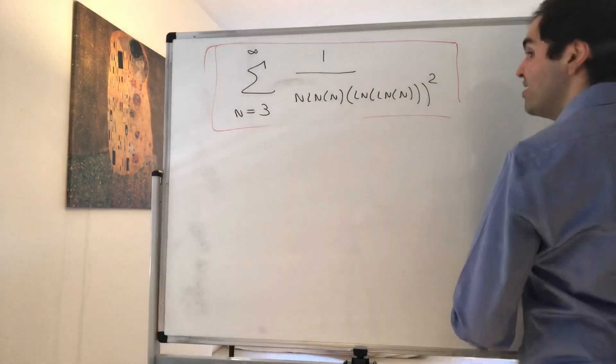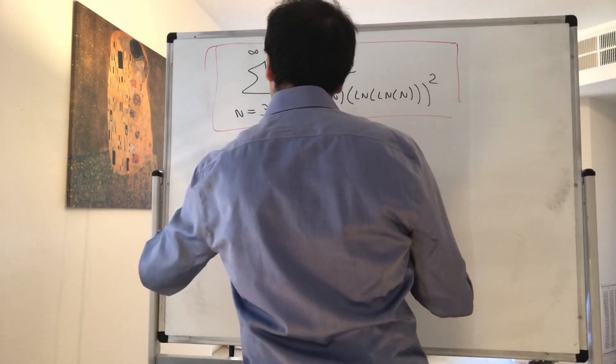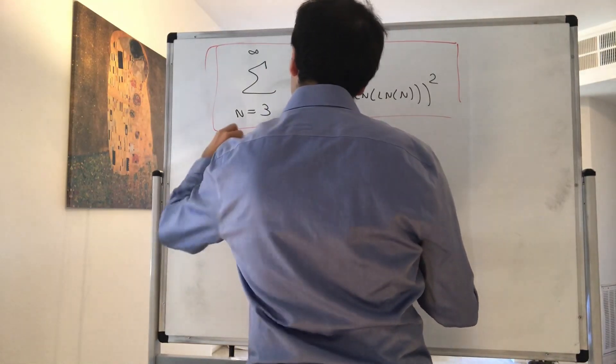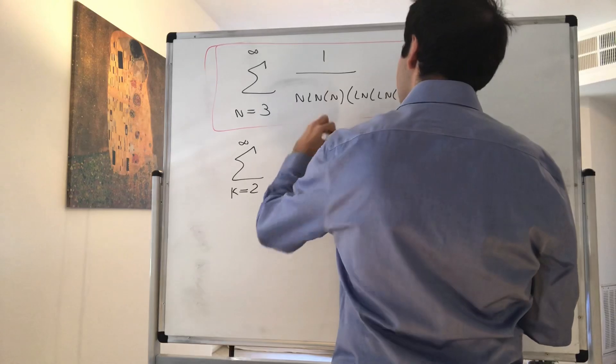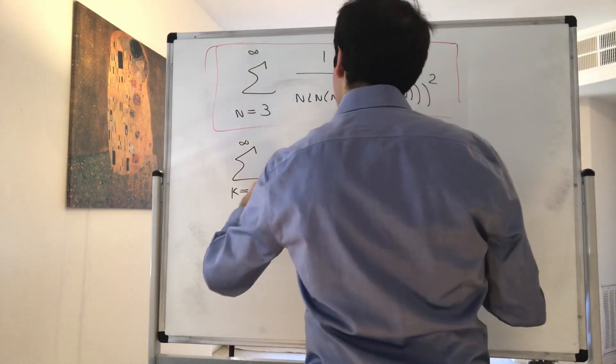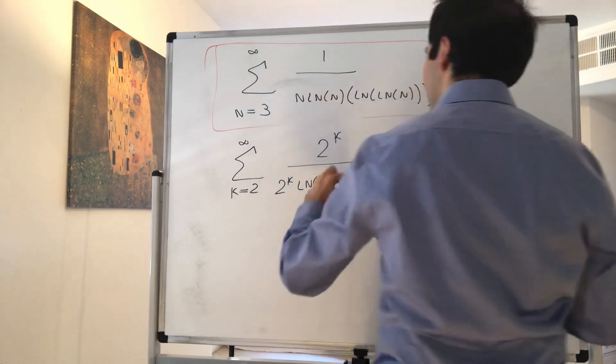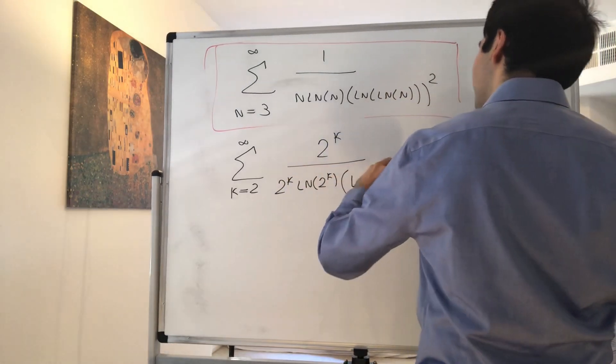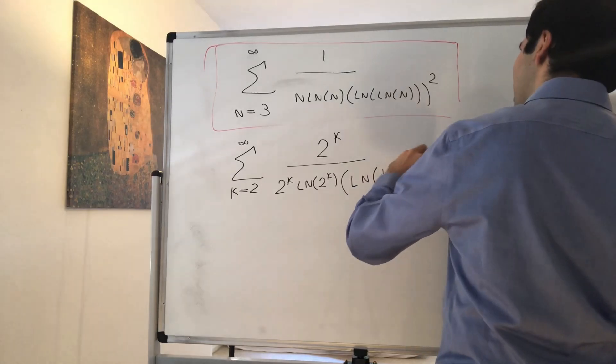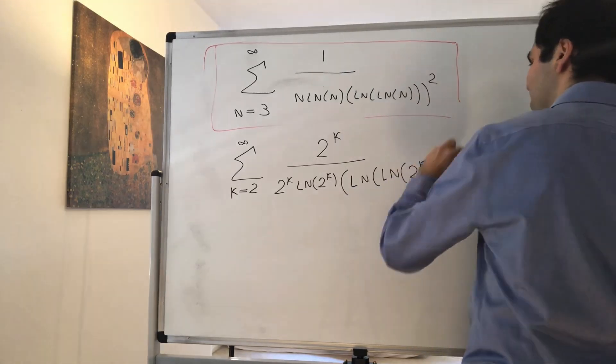So now let's calculate the sum from k equals 2 to infinity of 2 to the k over 2 to the k ln of 2 to the k. And the reason I'm doing this is for the block test, you get something slightly different. So ln of ln of 2 to the k squared.